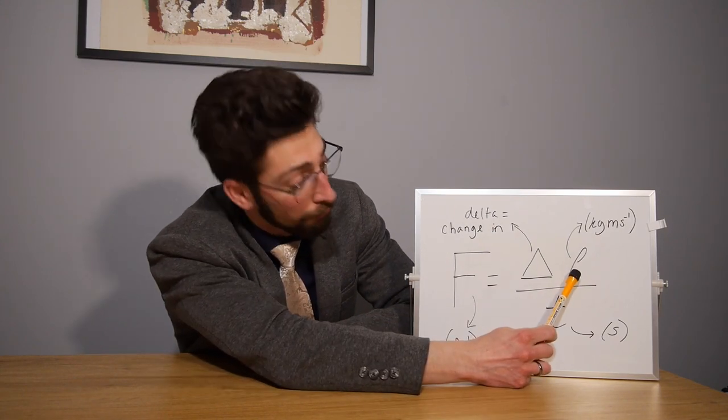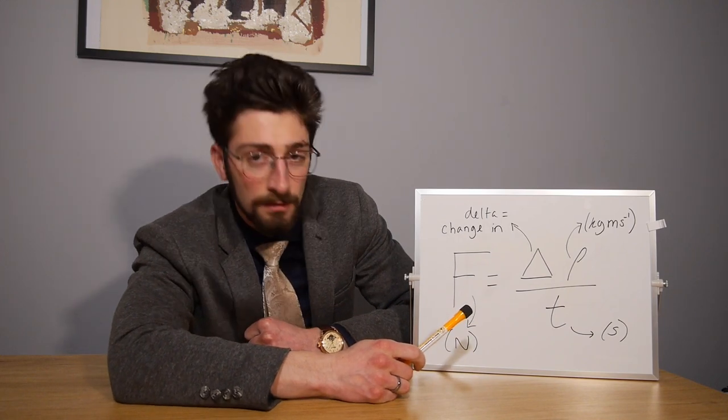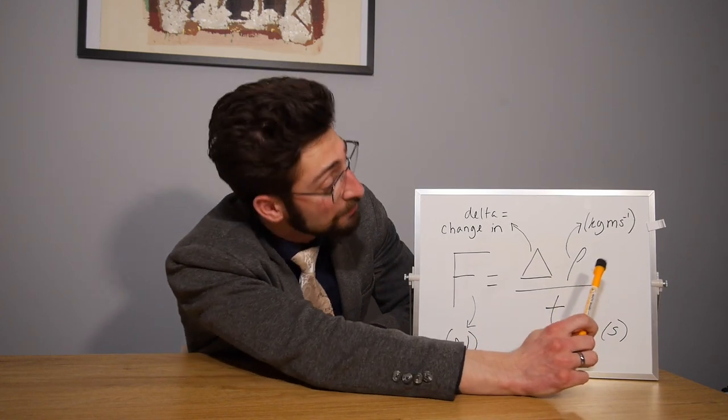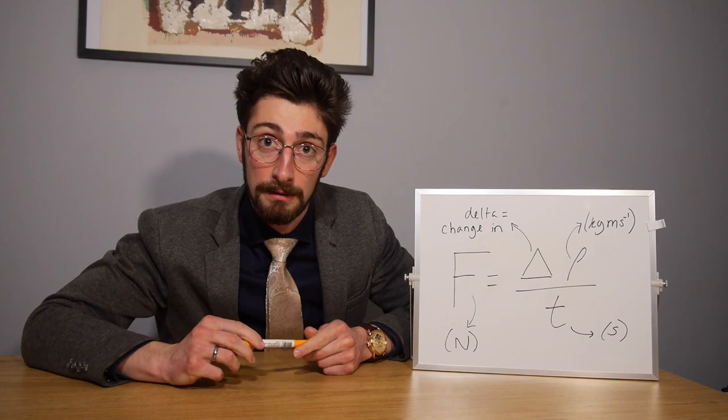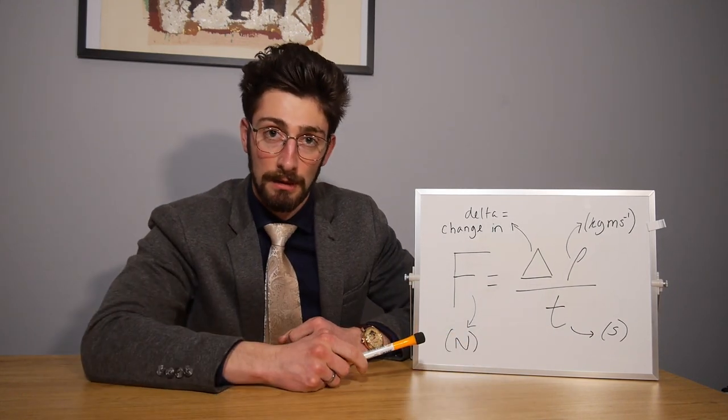Okay? And then we've got rho, the Greek letter rho, so two Greek letters next to each other. I don't know why they don't just put it in English, but anyway. And then we've got rho, which is momentum. And that's measured in kilograms per meter per second. Which is great. And then we divide that by time to get our force.